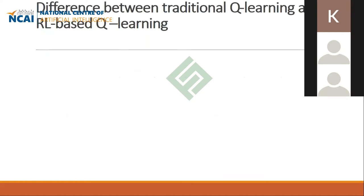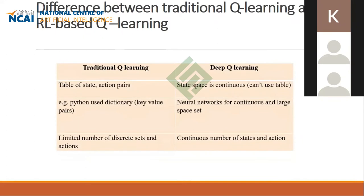There is an important difference between traditional Q-learning and deep Q-learning. Traditional Q-learning has a limited number of states, so you can use a static structure — like a Python dictionary (key-value pair) — to store state-action mappings. Deep Q-learning, by contrast, has continuous and infinite states and actions. For that you cannot use any static data structure; you need a neural network to handle continuous values across an unlimited set.